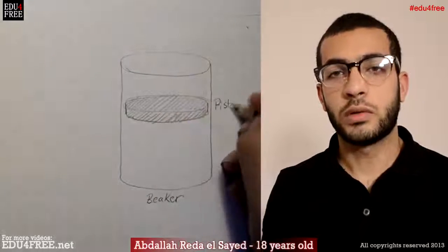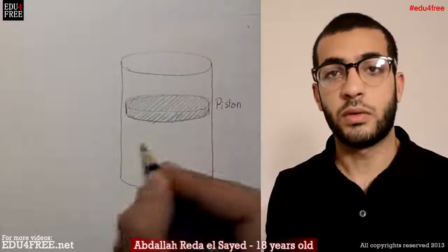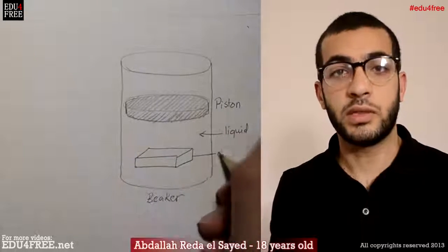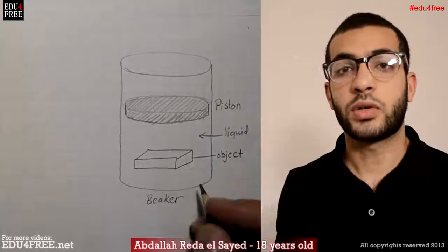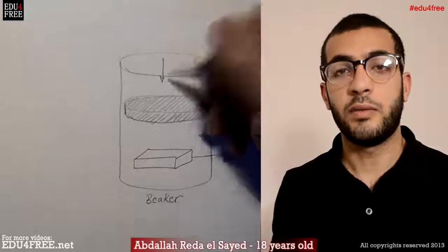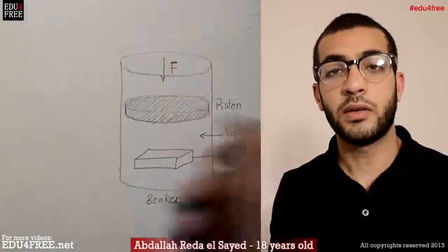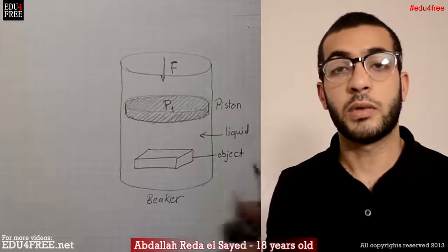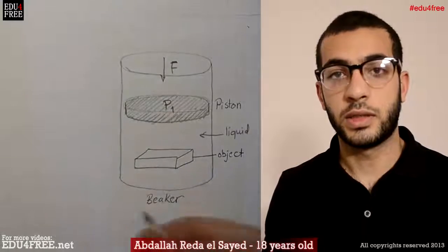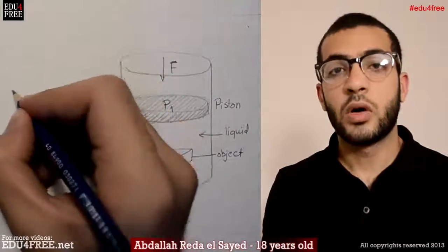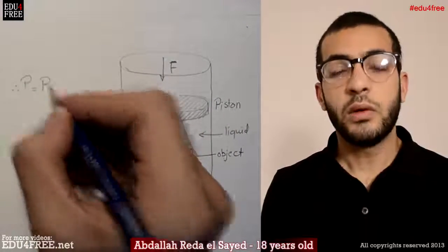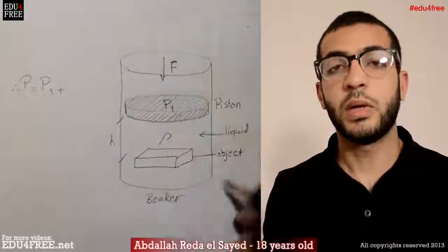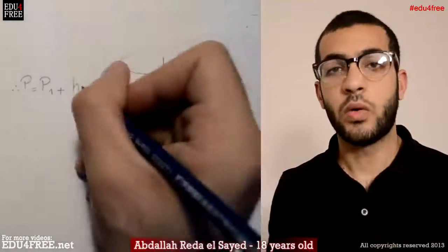If we want to calculate the pressure which is exerted over the object, we will find that the pressure equals the pressure of the piston plus the pressure of the liquid above the piston, and that will be the height of the liquid multiplied by its density and multiplied by the gravitational acceleration g. So p equals p1 plus h·rho·g.